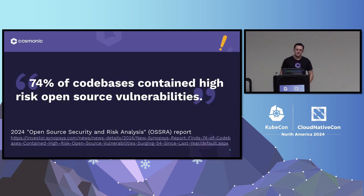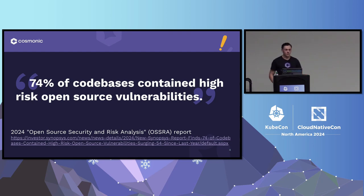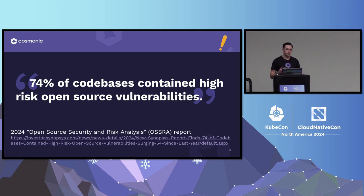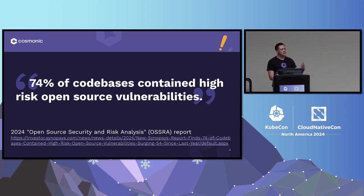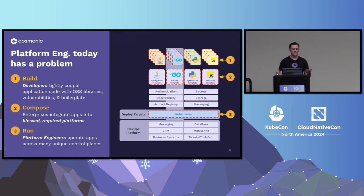Let's start with a fun quote: 74% of codebases — from a 2024 study — contained high-risk open-source vulnerabilities. Not just a vulnerability, but high-risk open-source vulnerabilities. This puts a huge burden on developers deploying applications, whether on their own or internally in a big enterprise, to keep their code up to date. These vulnerabilities come from libraries you're importing for your application to work — it's not actually your code — yet you're taking on the burden of maintaining them.